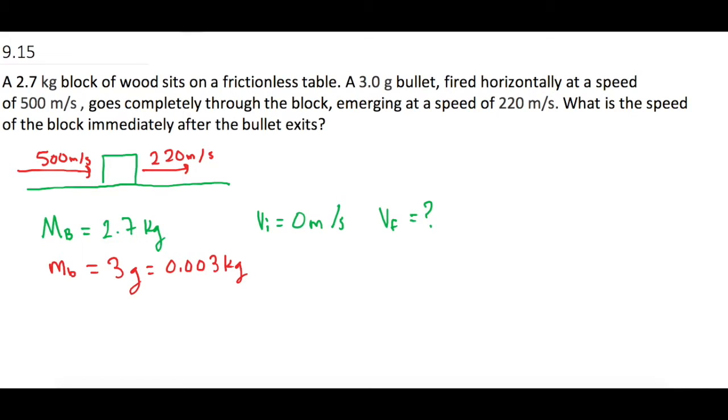Now the initial speed of the bullet, they tell us, is 500 meters per second, and the final speed of the bullet is 220 meters per second.